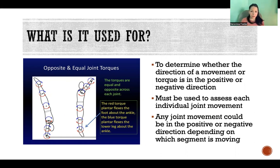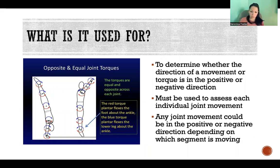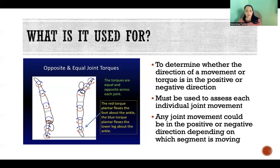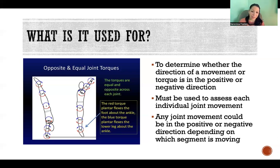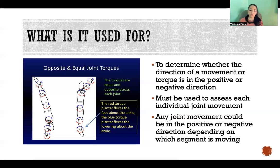Any joint movement can happen in the positive or negative direction because it depends on which segment is moving. For example, if we look at this picture in the box, we see the red torque plantar flexes the foot about the ankle and the blue torque plantar flexes the lower leg about the ankle. These arrows are going in opposite directions, but both cause plantar flexion. Is the foot coming up towards the shin, or is the shin coming down towards the foot? In either case, that's dorsiflexion, but the movement is happening in opposite directions. So we can't just say all hip flexion is positive or all knee extension is negative, because it depends on which segment is moving and in which direction.